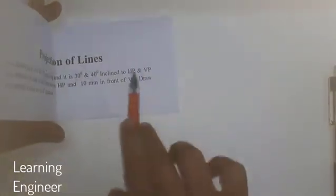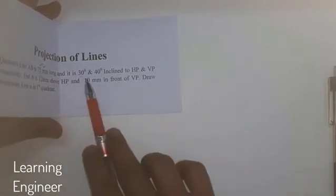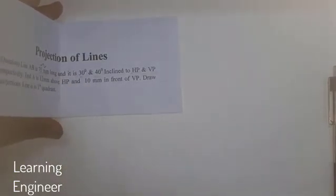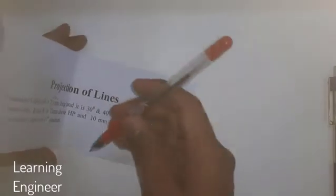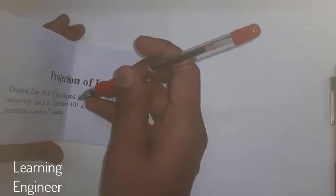When we talk about HP and VP — this is our horizontal plane and this is our vertical plane. The line is inclined to both HP and VP. It is inclined to HP and also inclined to VP, so the position of the line will be like this.